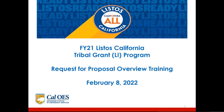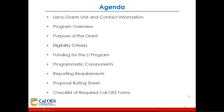Thank you, Cindy. Today is February 8th, 2022, fiscal year 21 Listos California Tribal Grant LI program request for proposal overview training. The agenda items we will be going over are: the Listos Grants Unit and contact information, program overview, purpose of the grant, eligibility criteria, funding for the LI program, programmatic components, reporting requirements, proposal rating sheet, and checklist of required CalOES forms.